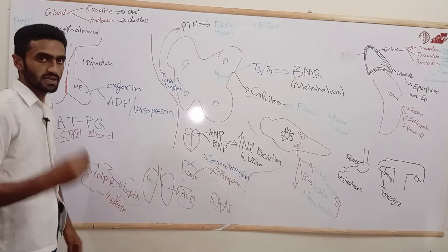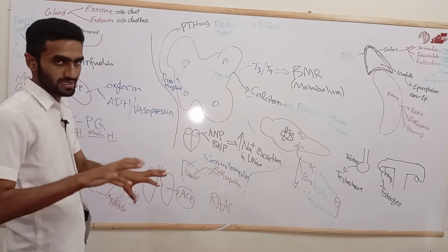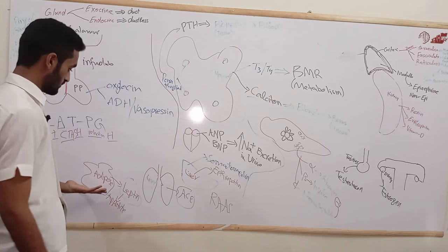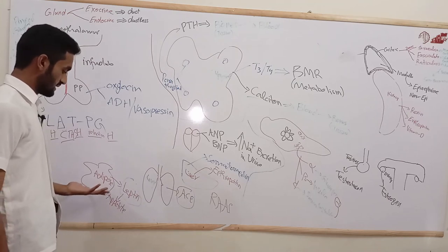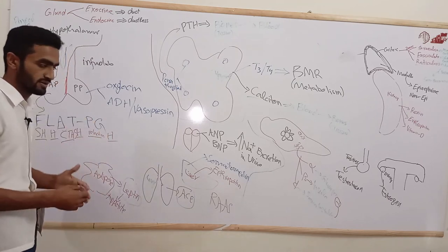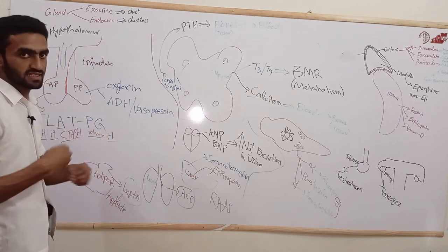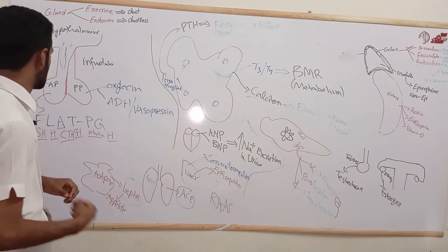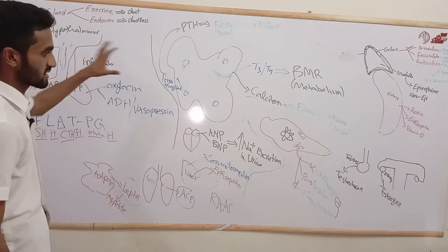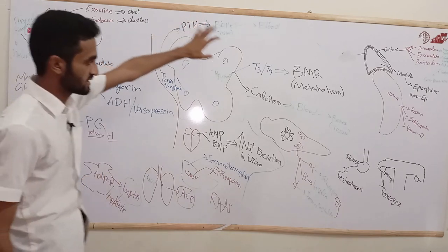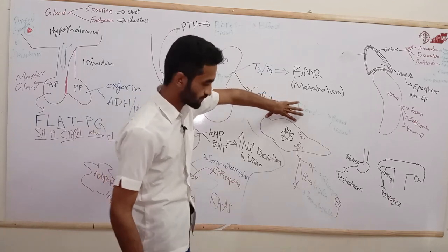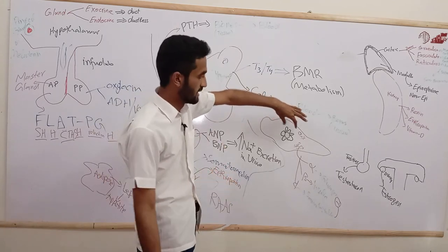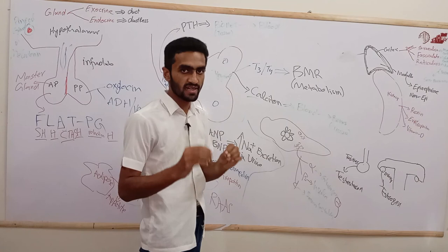Adipose tissue secretes leptin, which suppresses appetite. This hormone is also discussed in the digestive system or GIT module.